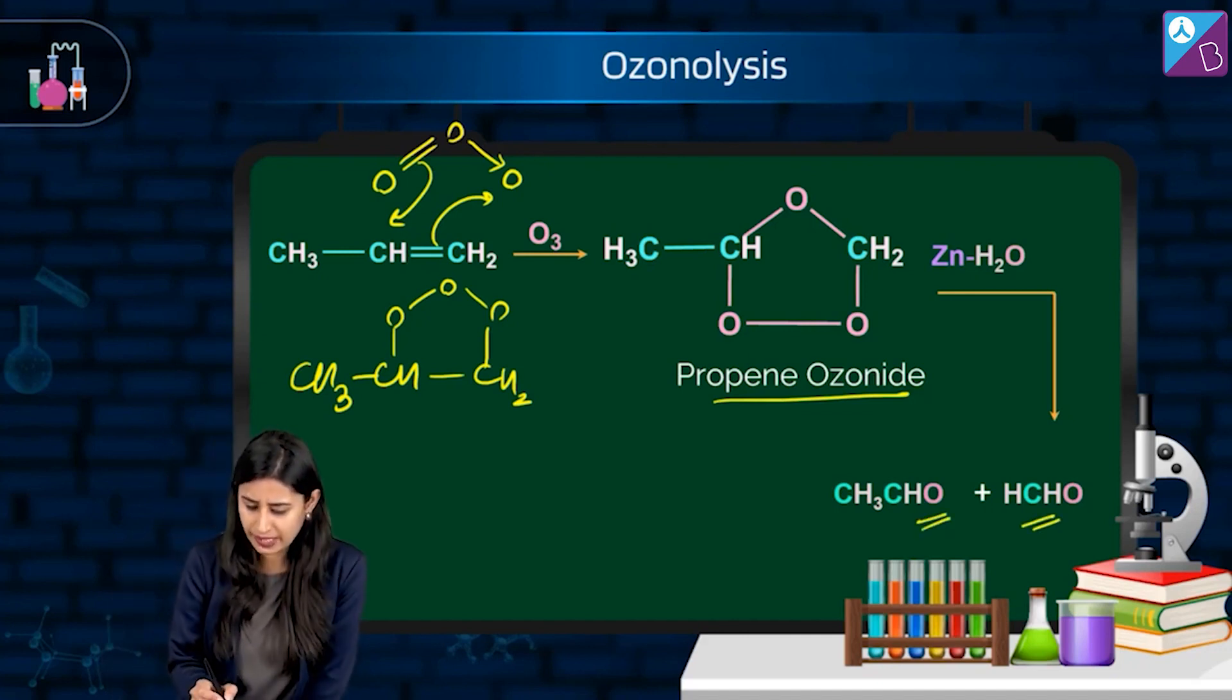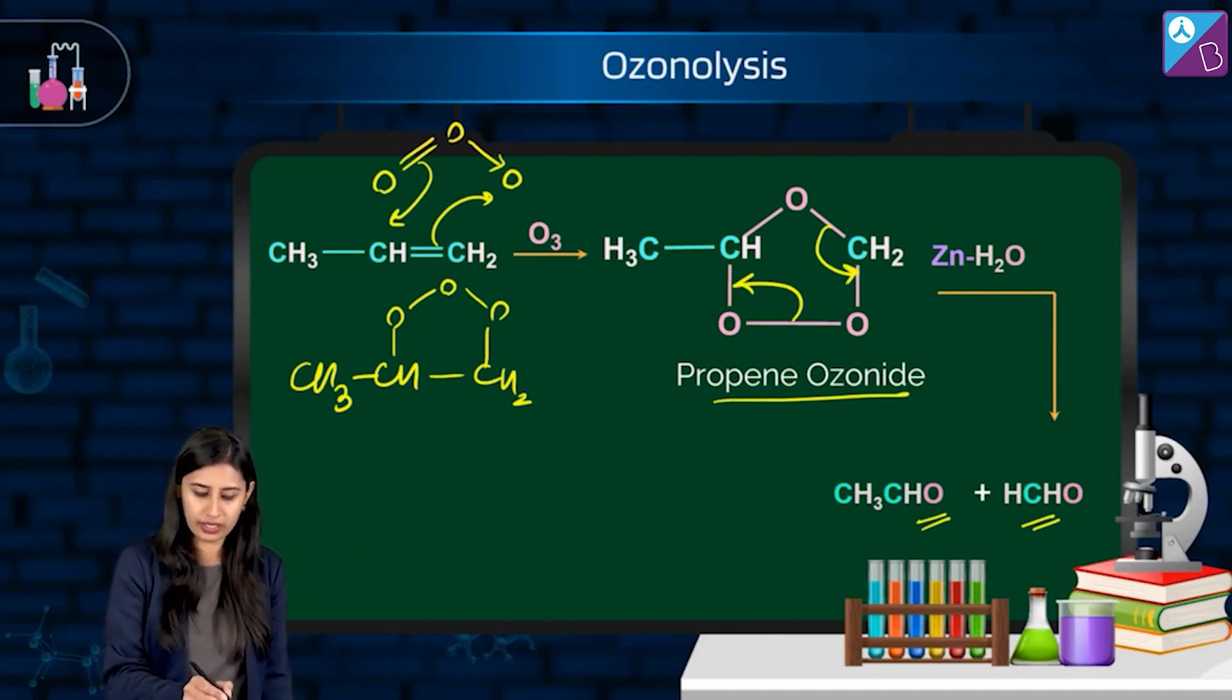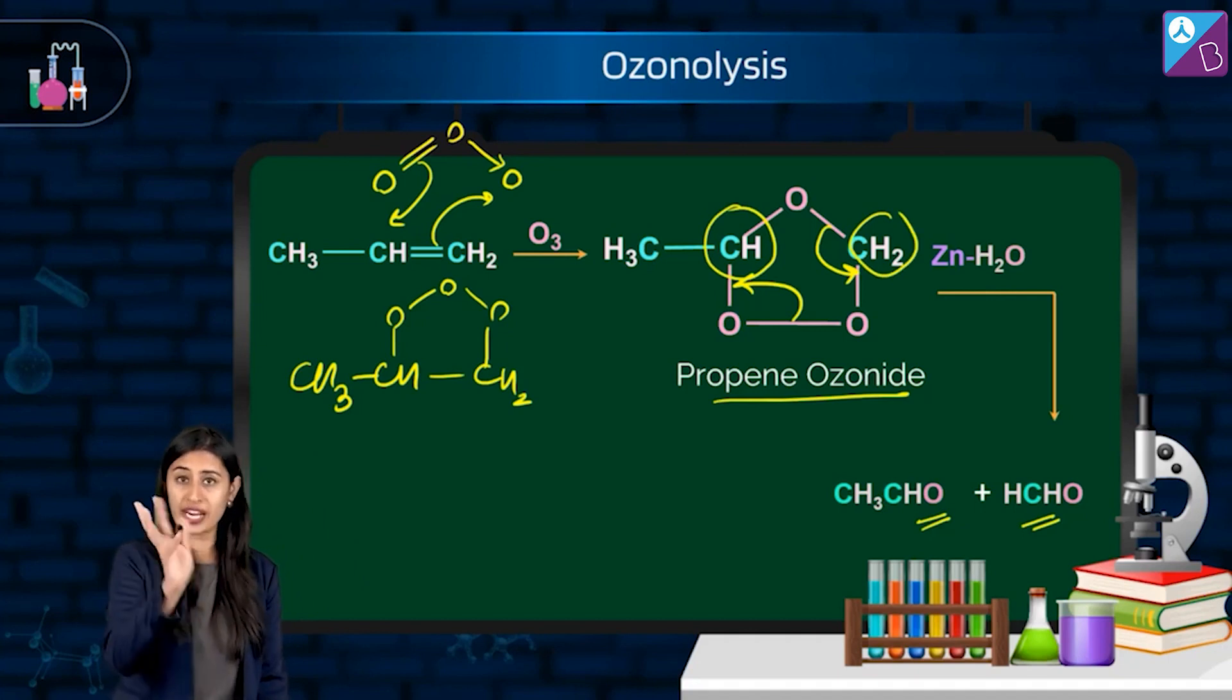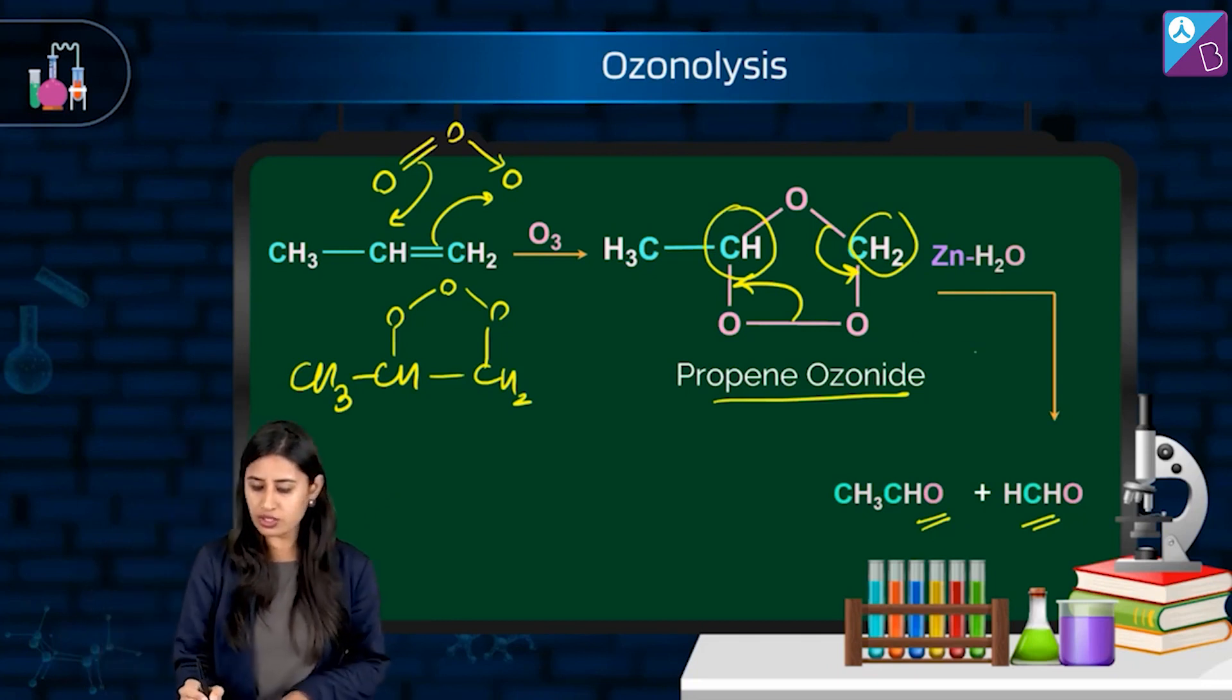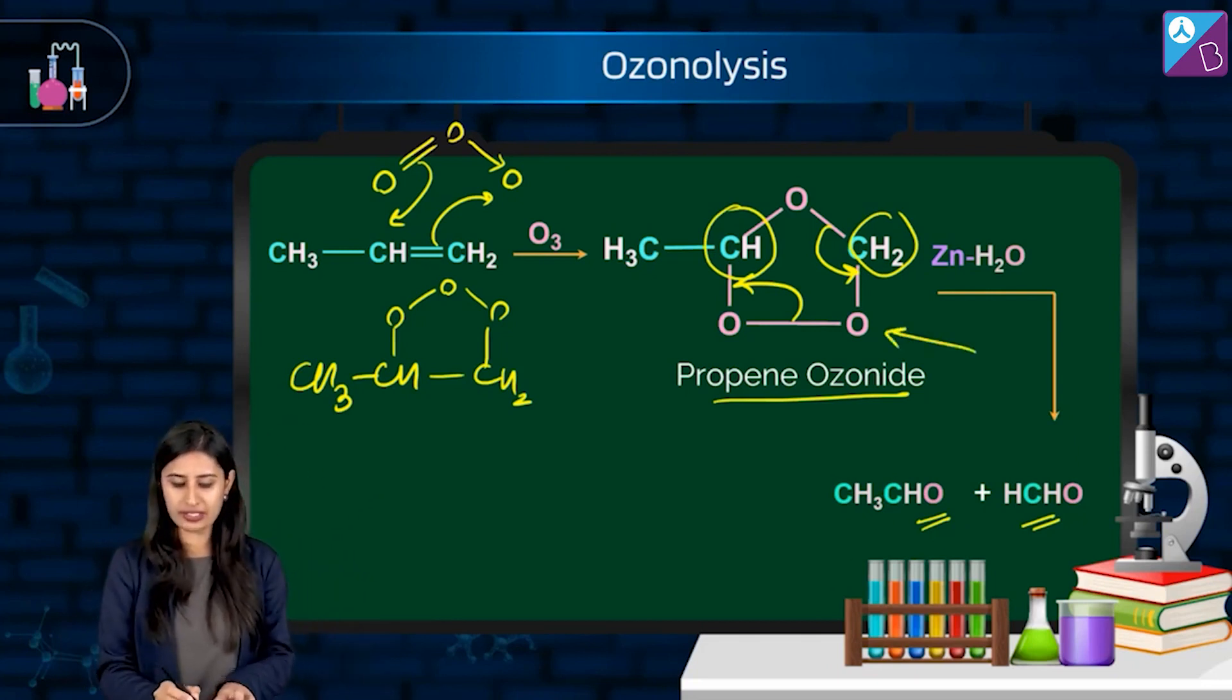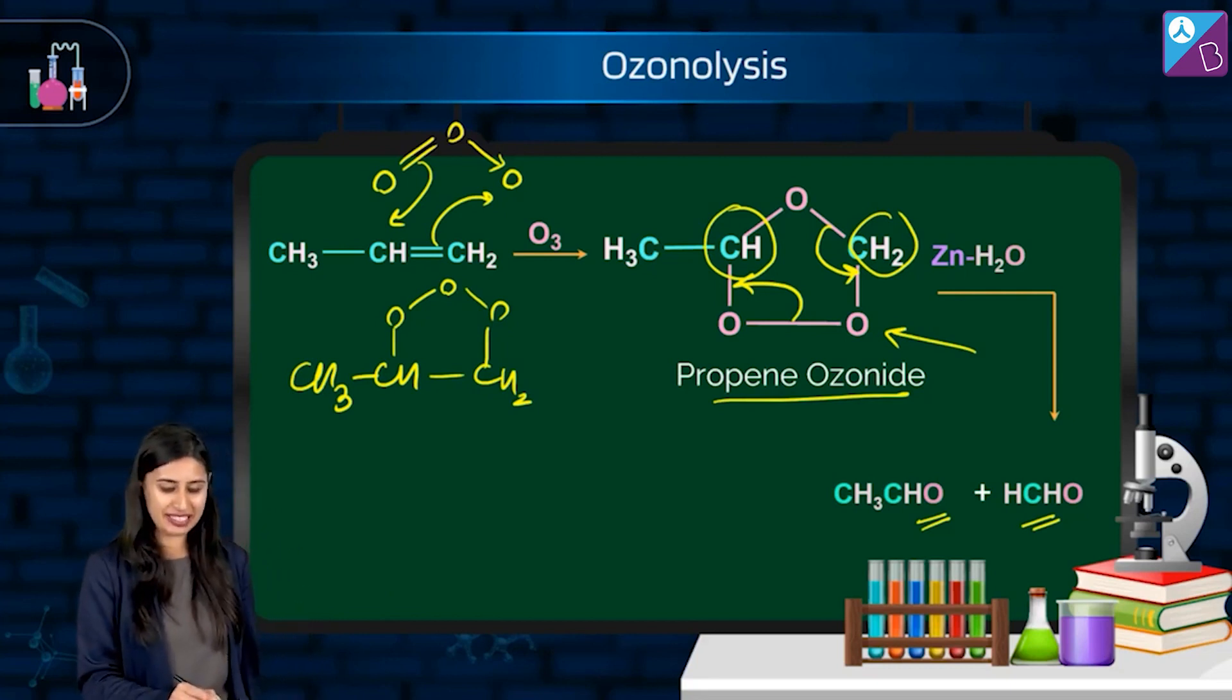So possibly what's happening is the bond is cleaving here. And what you're getting is a double bonded oxygen. Here also with this carbon, here also fragments you have got. Fragments means small part out of a big part. And one of the oxygens which was alone is giving us zinc oxide.